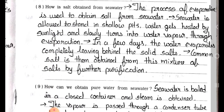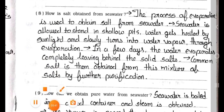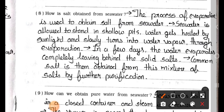Question 8: How is salt obtained from seawater? Answer: The process of evaporation is used to obtain salt from seawater. Seawater is allowed to stand in shallow pits. Water gets heated by sunlight and slowly turns into water vapour through evaporation. In a few days the water evaporates completely, leaving behind the solid salt. Common salt is then obtained from this mixture of salts by further purification.